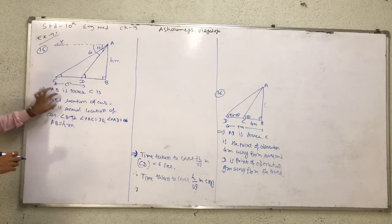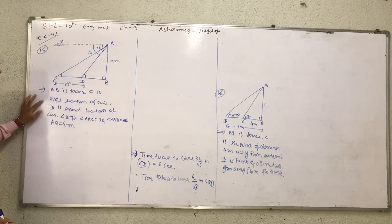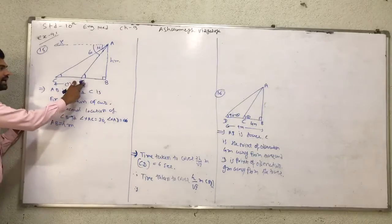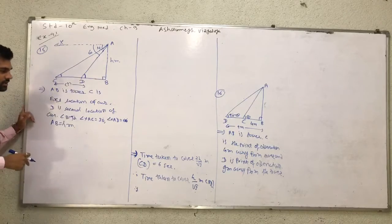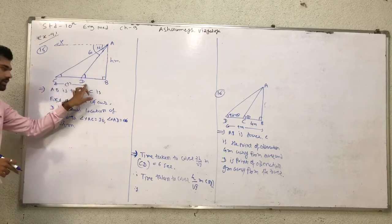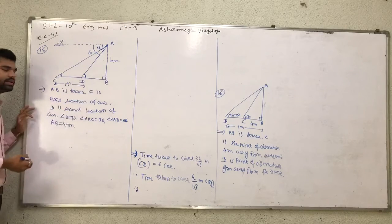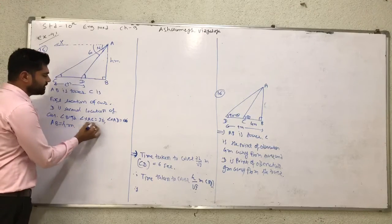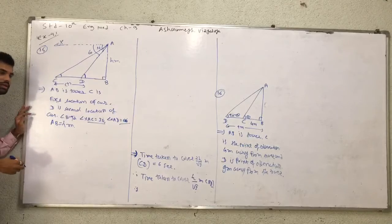Here D1AV is a tower. Point C is the first location of the car, point D is where the car reaches after 6 seconds. Angle E is equal to 90 degrees. Here we have an angle of depression and then we get an angle of elevation.